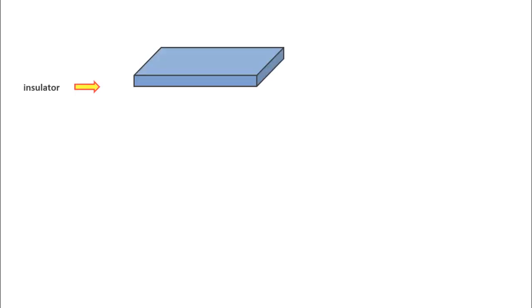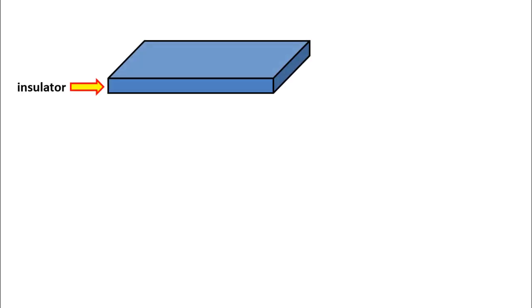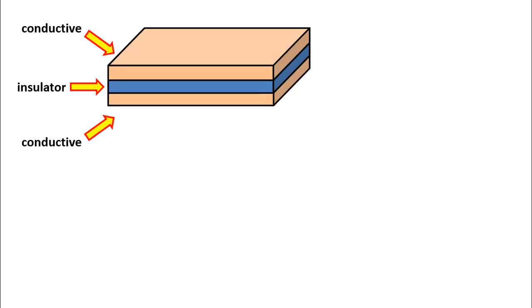Well, how is the structure of the capacitor? Let's take a look at it now. It contains an insulating material called dielectric. It consists of conductive metal plates placed on both sides of it.